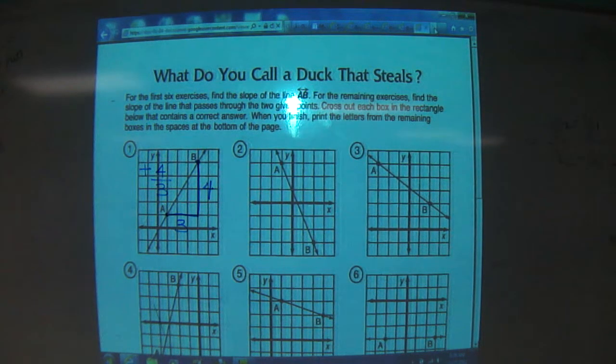Slope is easy and fun. It's just rise over run. Always leave it as an improper fraction. We do not turn slope into mixed numbers. That's it. Draw a right triangle, and you're done.